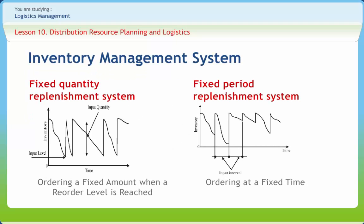Analysts use two primary approaches to determine when the order should be placed. The first is the Fixed Quantity Replenishment System, shown on the left side of the screen. Under this system, the order is placed when the inventory has fallen below a definite level; the quantity to be ordered is predetermined and the reorder point is specified such that demand can be met from existing inventory during the replenishment period. The right side of the screen shows the Fixed Period Replenishment System, under which the order is placed on a predefined period, and the replenishment quantity is often determined so as to replenish inventory to a given maximum level.